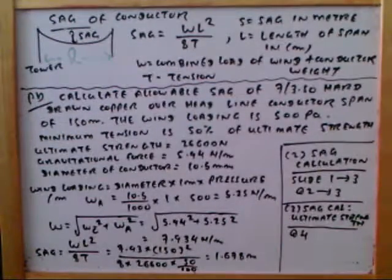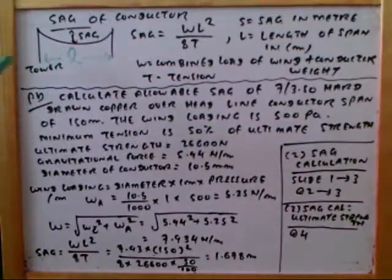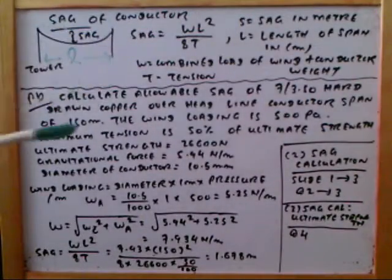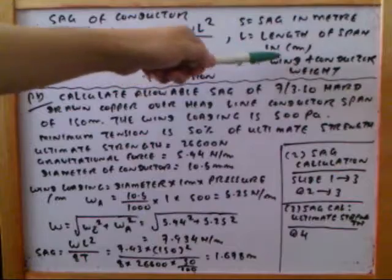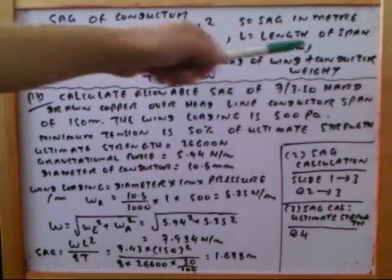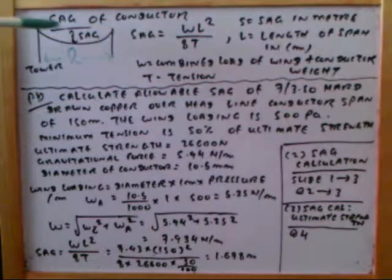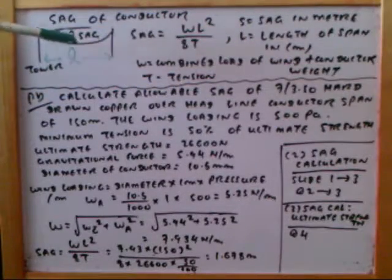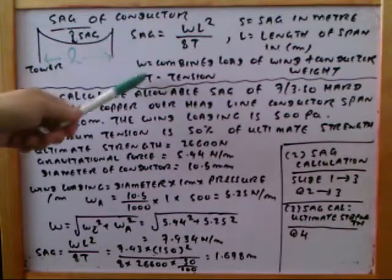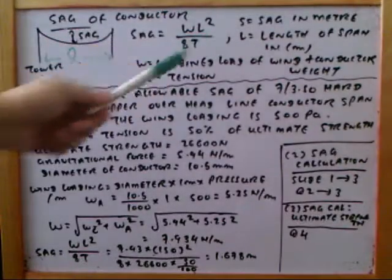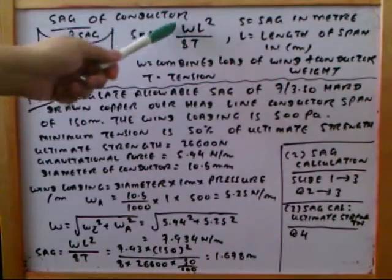So 'a' is the length of the span in meters, and 'w' is the total component load combining the wind load and the conductor weight. Wind load and conductor weight are combined. 'T' is the tension. So sag equals wa² divided by 8T.